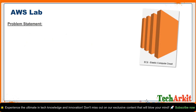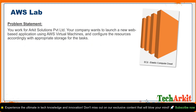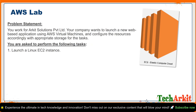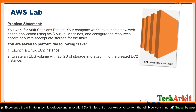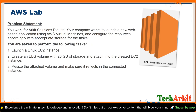The problem statement is: you are working for ARKIT Solution Private Limited. Your company wants to launch a new web-based application using AWS virtual machines and configure the resources accordingly with appropriate storage. You are asked to perform the following tasks: launch a Linux EC2 instance, create an EBS volume with 20 GB of storage and attach it to the EC2 instance, then resize the attached volume and make sure it reflects in the connected instance.